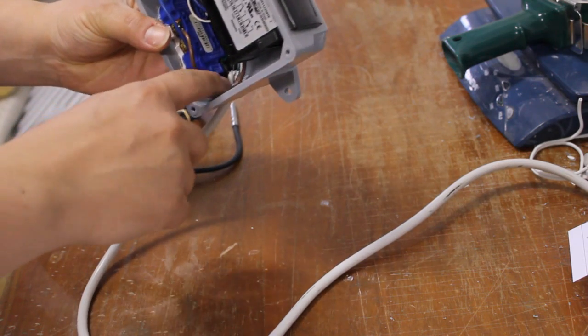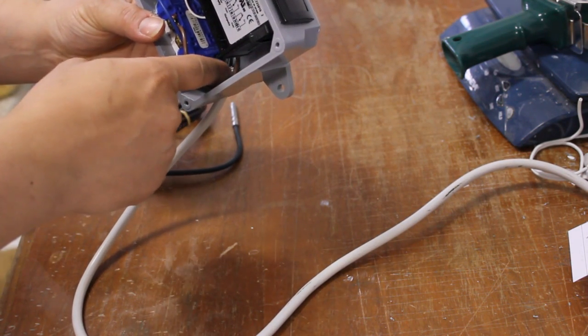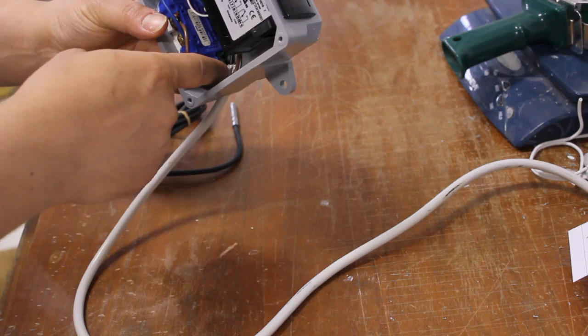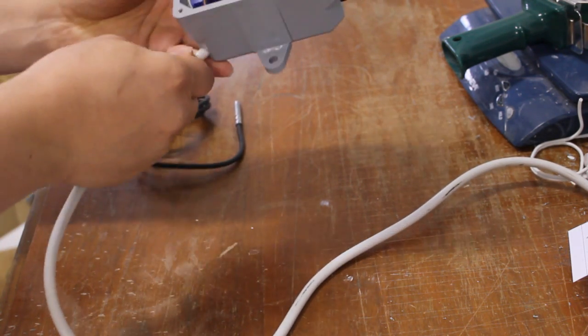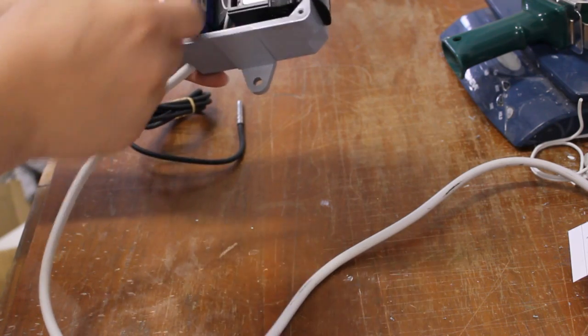When the power cord came in here I left some of the jacket on there and I split it into two pieces and then tied it into a knot twice. So now you can't pull this out and rip some of the wires out.